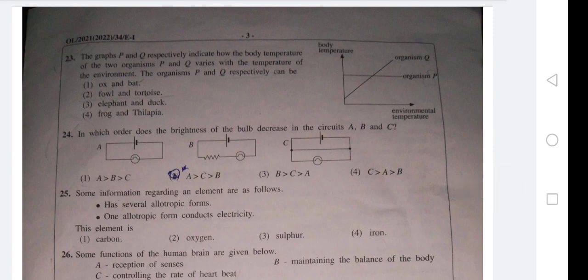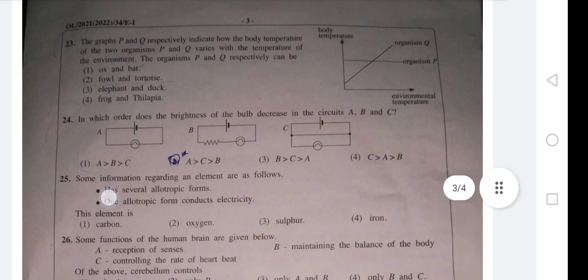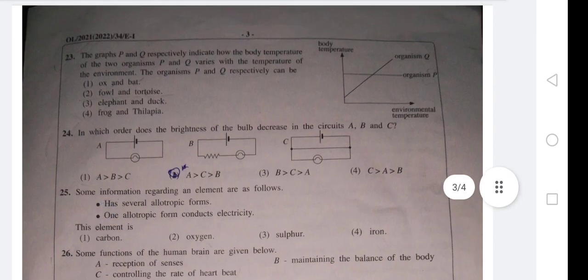Question 23: The graphs P and Q respectively indicate how the body temperature of two organisms P and Q varies with the temperature of the environment. The organisms P and Q respectively are. Now organism Q, if you take, when the environment temperature is increasing, parallelly the body temperature also increases.